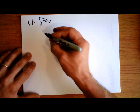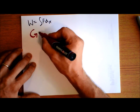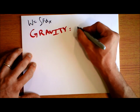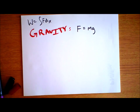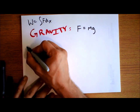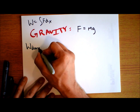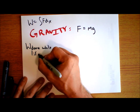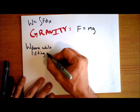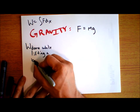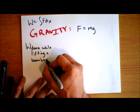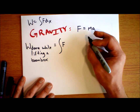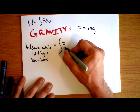Starting with the force of gravity: near Earth, the force of gravity is m times g. So let's figure out the work done while lifting something — lifting a boombox. The work done while lifting a boombox is the integral of that force over the distance that we've lifted it.